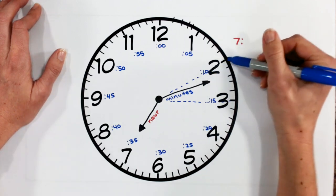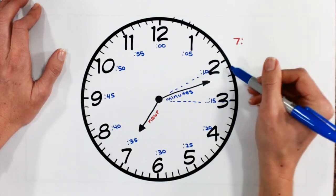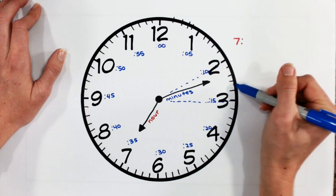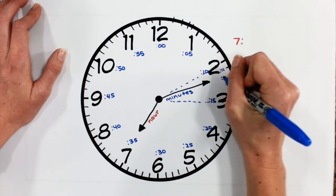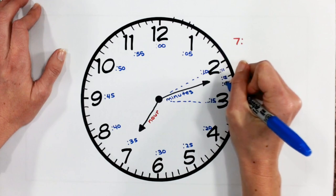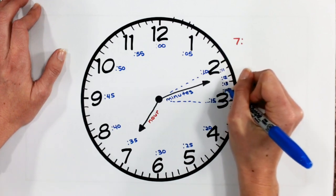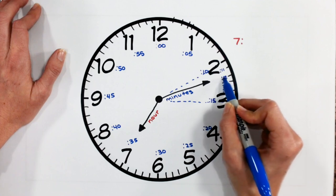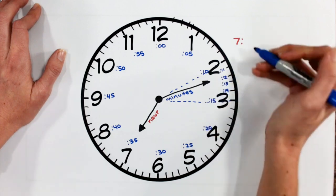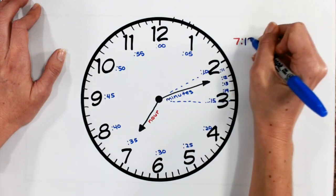So from 10, I'm going to count to 15 using these smaller marks on my clock. So I have 11, 12, 13, 14. So I can see that my minute's hand is pointing to the 12-minute mark. So my time on this clock is 7:12.